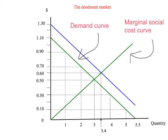The supply curve is also, in this case, the marginal social cost curve. Why? We've only got one externality here — it's on the demand side, in the consumption of deodorant. We've already incorporated that via our marginal social value curve. So marginal social cost and marginal private cost are the same, because there is no externality in the supply of deodorant. The equilibrium is where supply and demand intersect: a price of 50 cents and a quantity of 3 squirts of deodorant per day. Left to the market, Sam will buy 3 squirts per day at 50 cents per squirt.